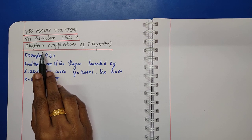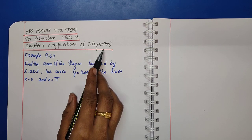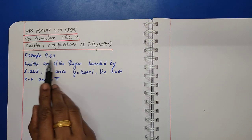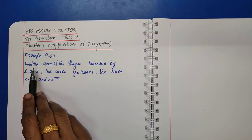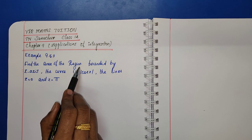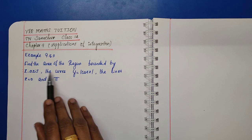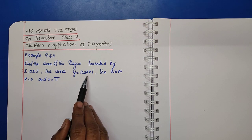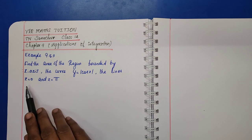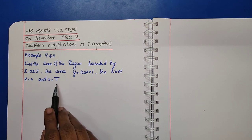Chapter 9: Applications of Integration. Example 9.53. Find the area of the region bounded by the x-axis, the curve y is equal to modulus cos x, the lines x is equal to 0 and x is equal to pi.